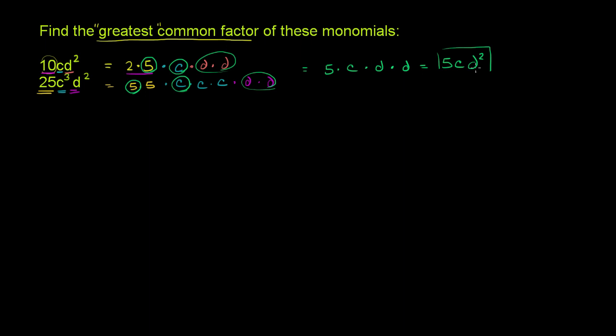And so 5cd², we can kind of view it as the greatest, but I'll put that in quotes, depending on whether c is negative or positive, and d is greater than or less than 0. But this is the greatest common factor of these two monomials. It's divisible into both of them, and it uses the most factors possible.